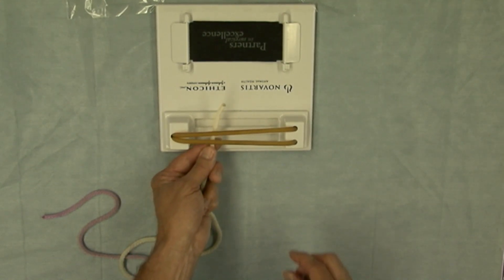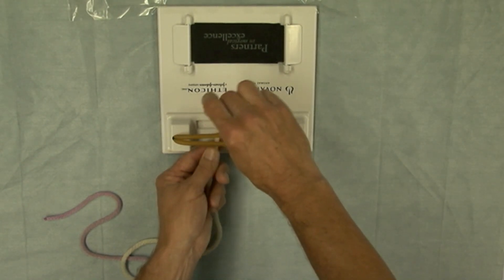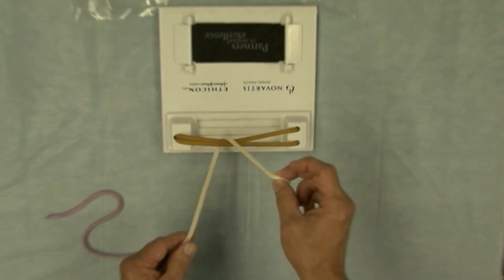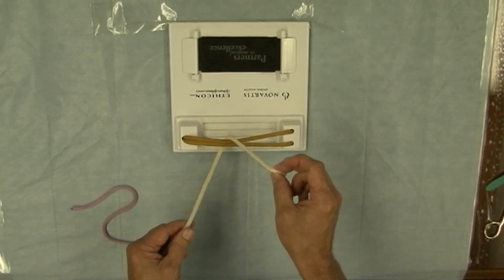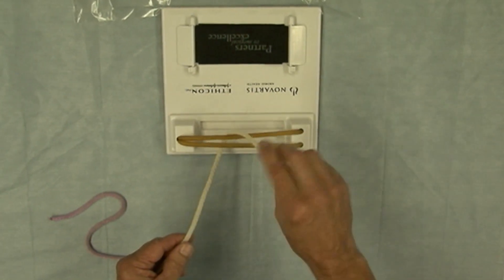You loop the short end of the suture around and grasp it with your right hand. Now if you recall, I was demonstrating the one-hand technique using my right hand.